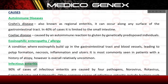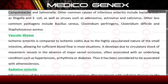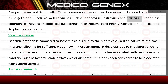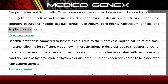Infectious enteritis: 90% of cases are caused by four pathogens — norovirus, rotavirus, campylobacter, and salmonella. Other common causes include bacteria such as Shigella and E. coli, as well as viruses such as Adenovirus, Astrovirus, and Calicivirus. Other less common pathogens include Bacillus cereus, Clostridium perfringens, Clostridium difficile, and Staphylococcus aureus.